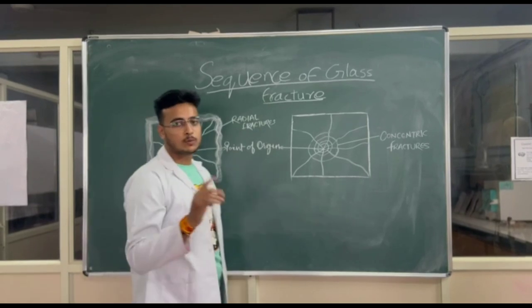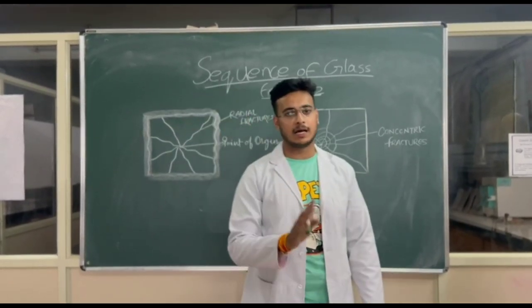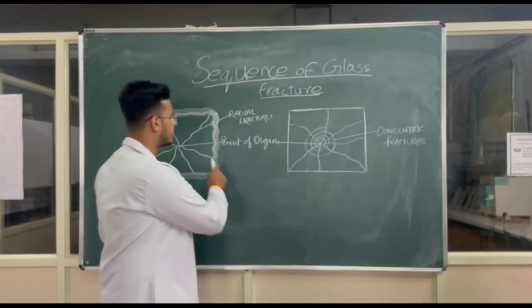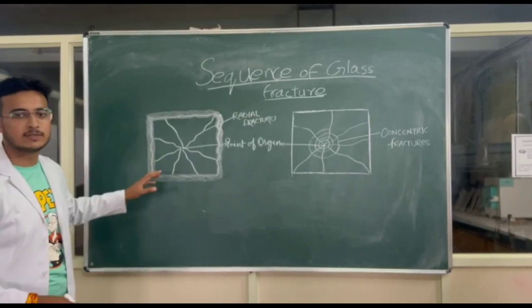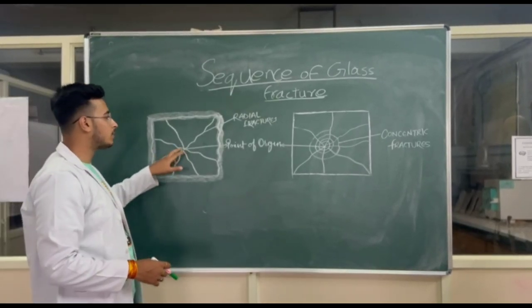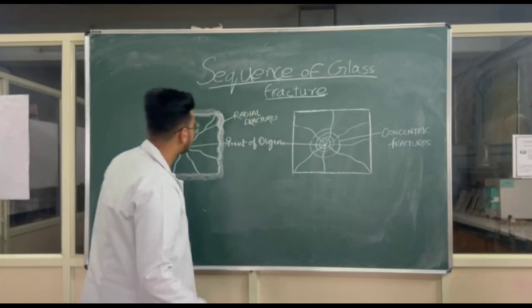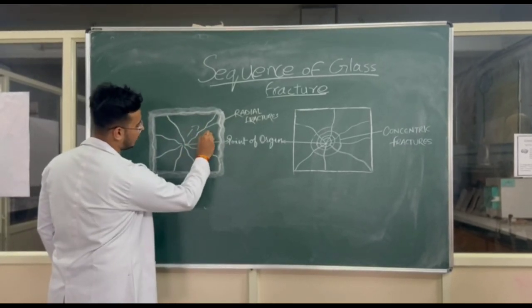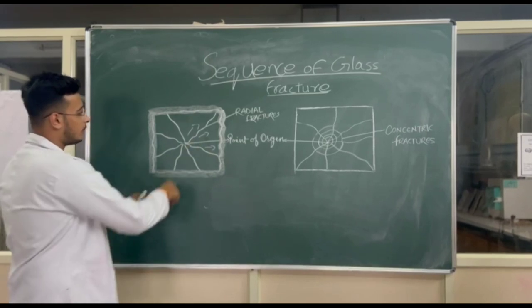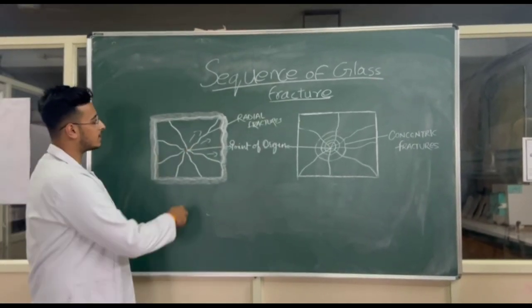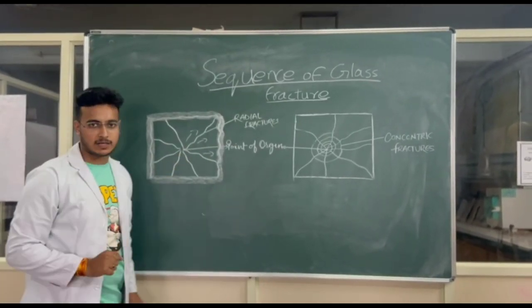Here, we will study the two major fractures which are seen in glass. First of all, we will study radial fractures. These are the fractures which start from the origin point and move outward from the glass. Here we can see that all the fractures are outward of the point of origin. These are known as radial fractures.